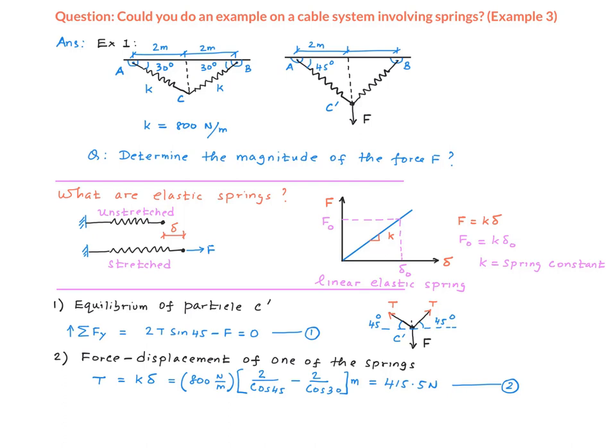This is going to be in meters. The spring constant is in Newton per meter and the length is in meters, therefore the tension in the spring is going to be in Newtons. If you simplify this, you get 415.5 Newtons. So T equals 415.5 N, this is our second equation. We have two equations, two unknowns, and we can solve for the force F.